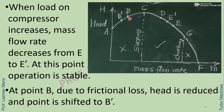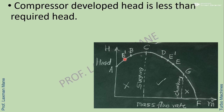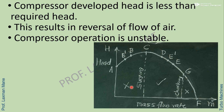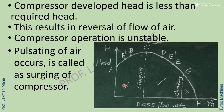At point B, due to frictional loss, if head is reduced, point B shifts to B-dash, meaning the compressor developed head is less than the required head. Compressor developed head is responsible for moving air in the delivery pipe. When developed head is less than required head, this results in reversal of air flow and unstable compressor operation. Pulsating of air occurs here, which is called surging of the compressor.